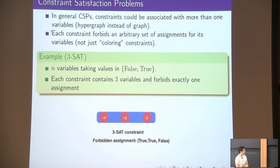For example, in the problem known as 3SAT, our variables take two values, either true or false, each constraint contains exactly three variables and forbids exactly one assignment. So for example, this constraint here forbids the assignment true-true-false for the variables X, Y, and Z.